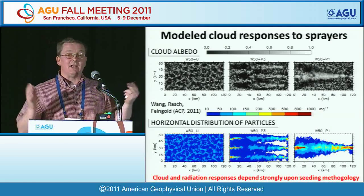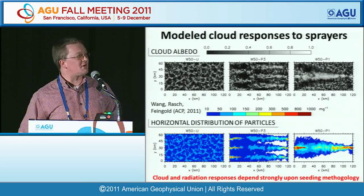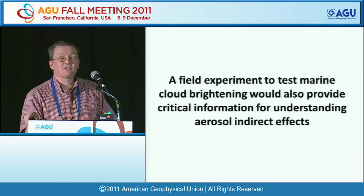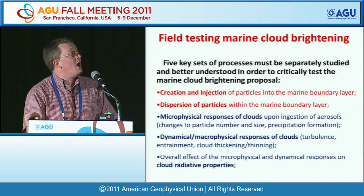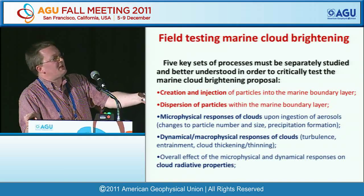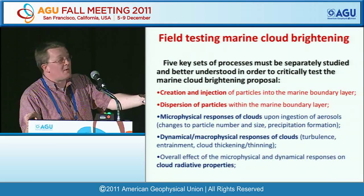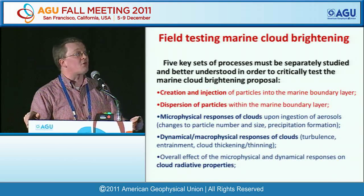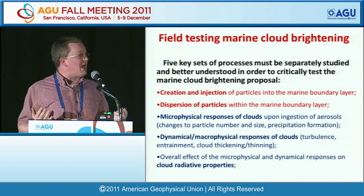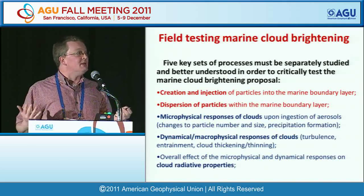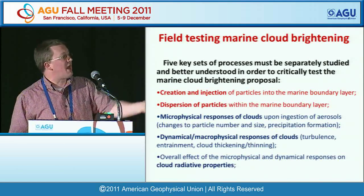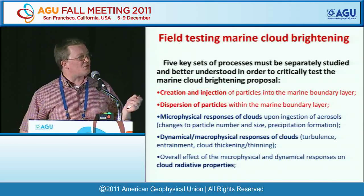A field experiment could potentially provide really important information for understanding aerosol indirect effects — one of the largest sources of uncertainty in future climate warming. An experiment would have to address a series of increasingly sophisticated questions: first, creating and injecting particles; then dispersing them; then understanding microphysical responses — how cloud droplet concentrations change; then understanding dynamical and macrophysical responses; and eventually understanding whether they actually brighten the clouds.